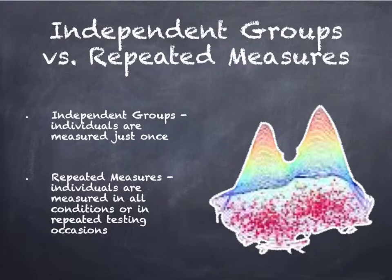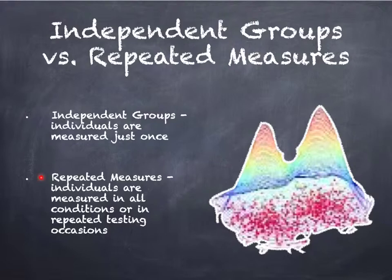Regarding independent versus dependent groups: with independent groups, individuals are measured just once under a single condition. With repeated measures, individuals are measured under all conditions or tested on repeated occasions.